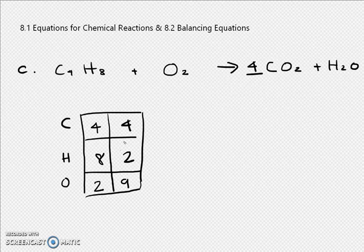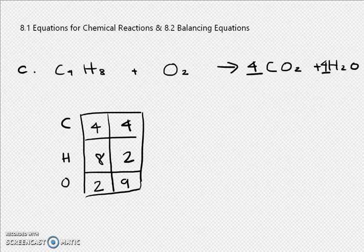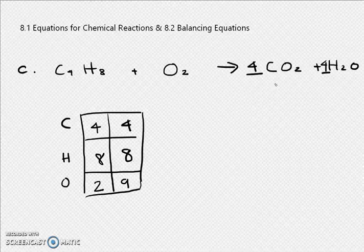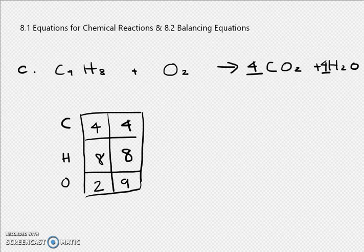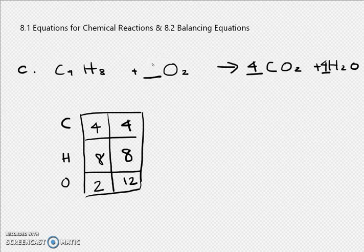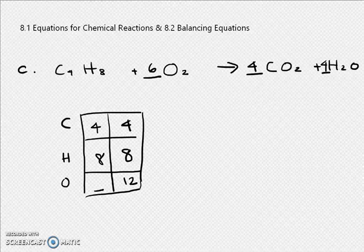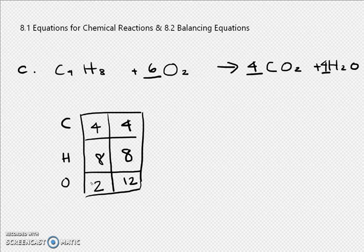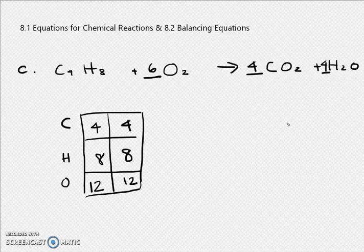To get 8 hydrogens, we put a 4 in front of H2O, giving us 8 hydrogens. Then 4 times 4 is... wait, 8 plus 4 is 12 oxygens on the right. So we put a 6 in front of O2 to get 12 oxygens on the left. Now everything is balanced.